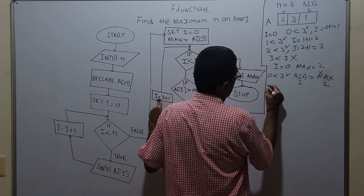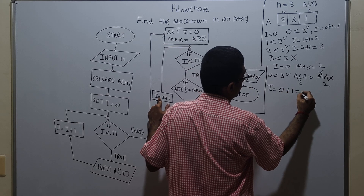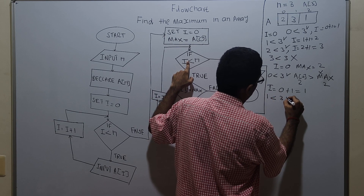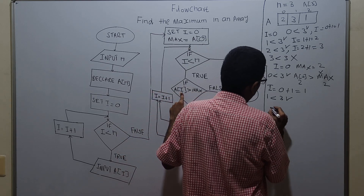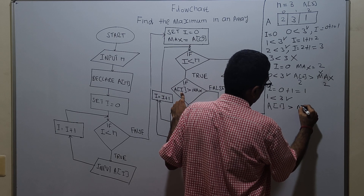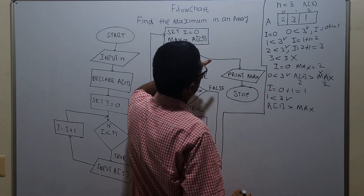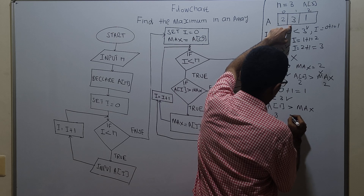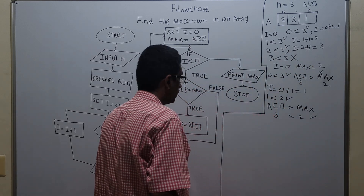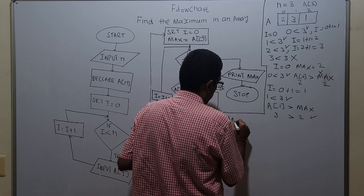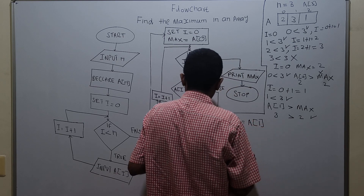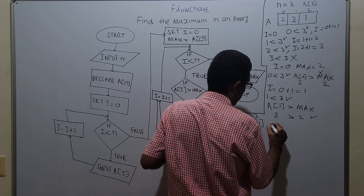Since it is false, I am incrementing i by 1: i equals 0 plus 1 which is 1. Now check i less than n: 1 less than 3, which is true. We check a of i greater than max: a of 1 — i is 1, and the value of a of 1 is 3. Greater than max, which is 2 — 3 greater than 2 is true.